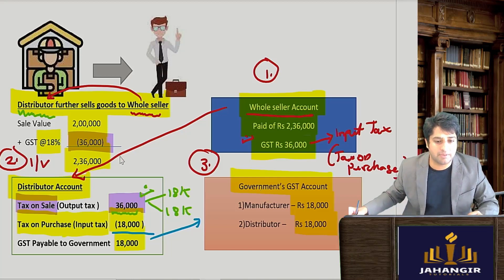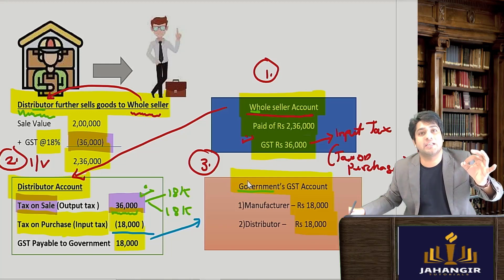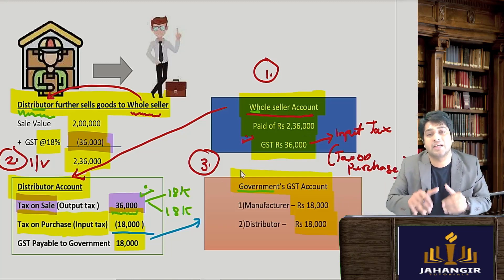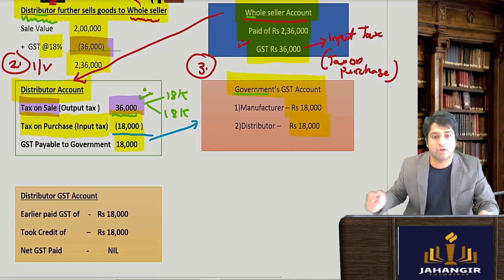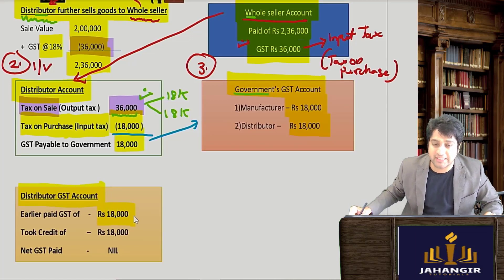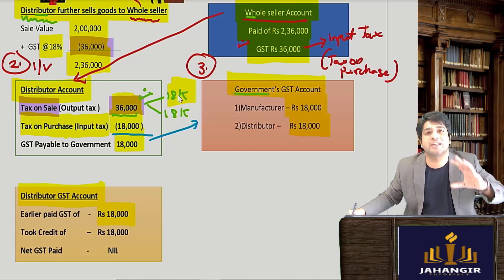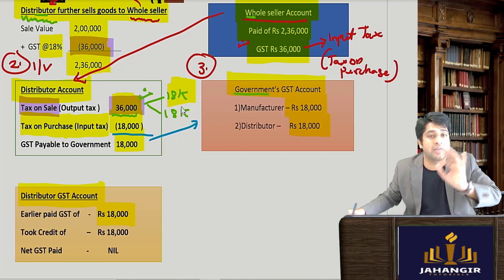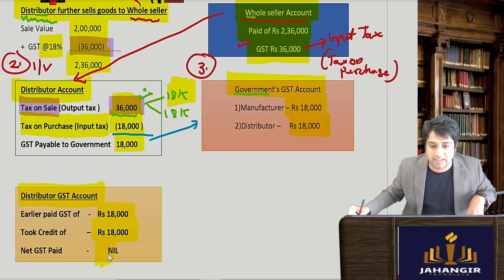Distributor's net GST is zero. Now let's look at the wholesaler. The wholesaler also further sells goods — he is also in business. He paid 36,000 input tax while purchasing. He says: 36,000 went from my pocket, but no tension — when I sell further, I'll take a credit of those 36,000. The wholesaler sells the goods to the retailer for 3 lakh rupees. At 18% GST, that's 54,000 GST, making the invoice price 3,54,000.